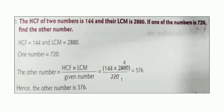To find the other number, there is a formula: HCF multiplied by LCM divided by the given number. What is HCF? 144. What is LCM? 2880. And what is one number? 720.